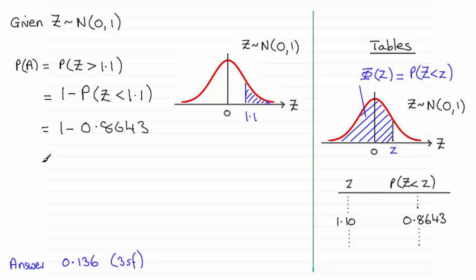And if you work that out, you end up with 0.1357. And round this to three significant figures, and that's going to be 0.136 to three sig figs, 3SF for short then.